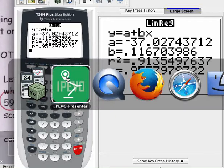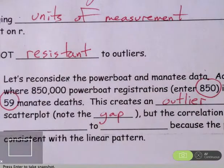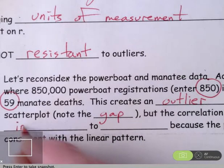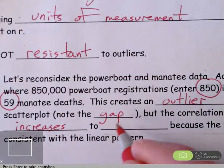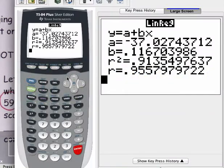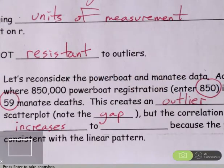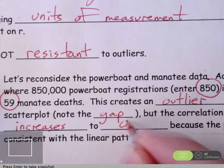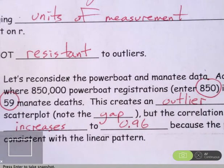So understand what's happened. This creates an outlier in the scatter plot. Notice the gap, but the correlation increases. The correlation increases to 0.96.